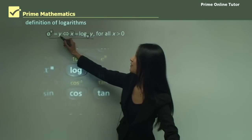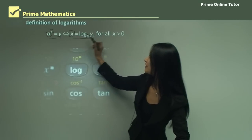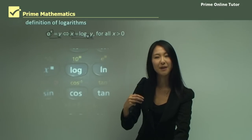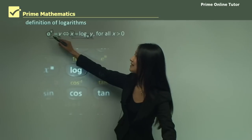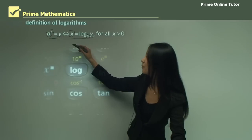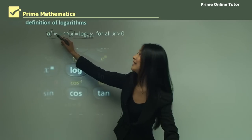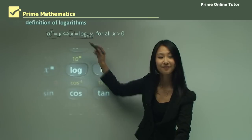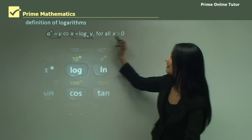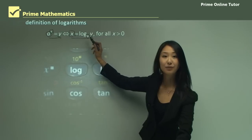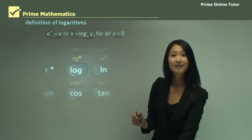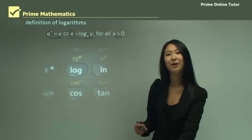And then lastly, y just goes over here. So just remember: the base of the index also becomes the base of the logarithm, and the index equals the logarithm. One important note: the base in the logarithm must always be bigger than zero — keep that in mind for the questions we work through later.